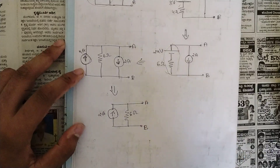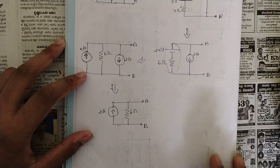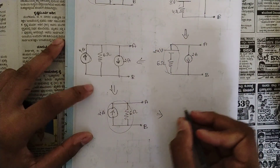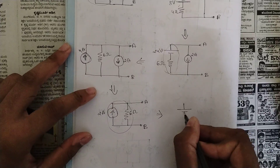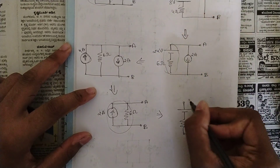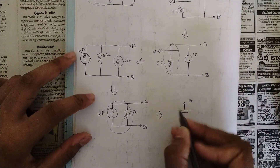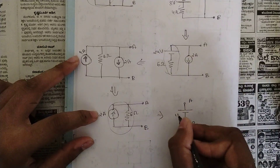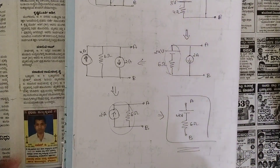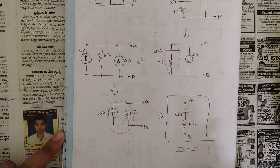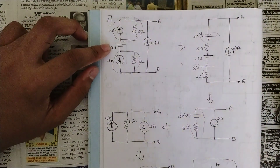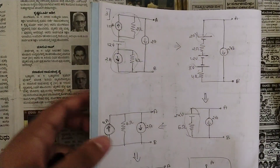We are asked to reduce the circuit to one single voltage source and single resistance. So we do the final conversion: the current source with the 6 ohm parallel resistance converts to a voltage source in series. The arrowhead is upwards, so plus-minus polarity, along with the 6 ohm resistance between terminals A and B. V = I × R = 2 amps × 6 ohms = 12 volts. This is our final answer. By using source transformation we have reduced this simple circuit. Copy this problem down — it's an easy one.